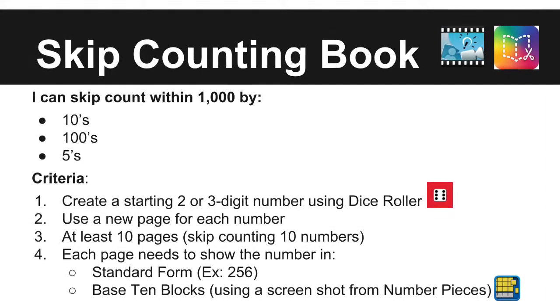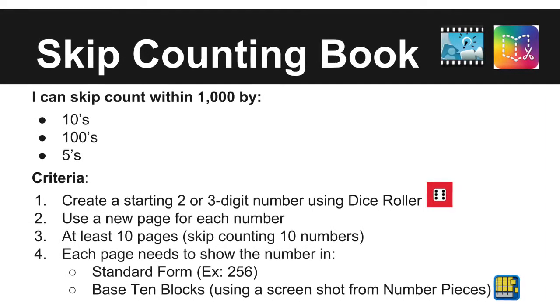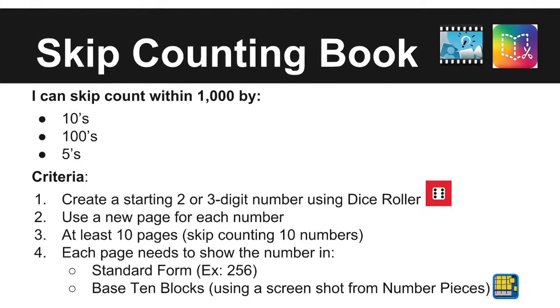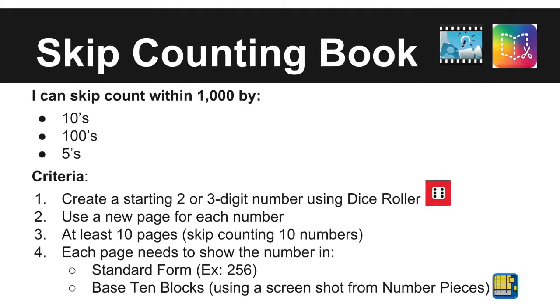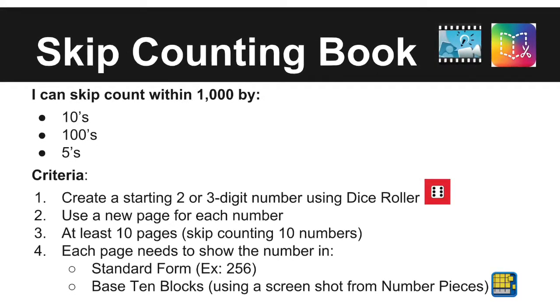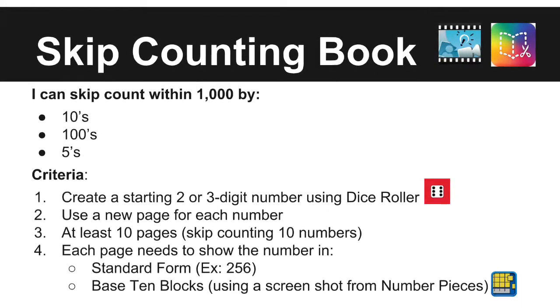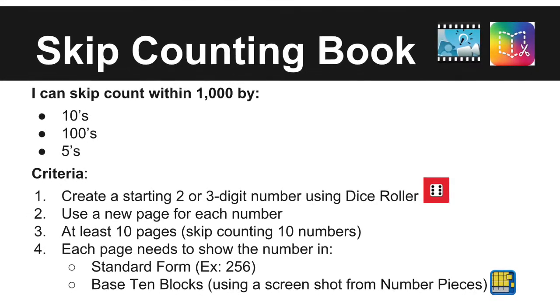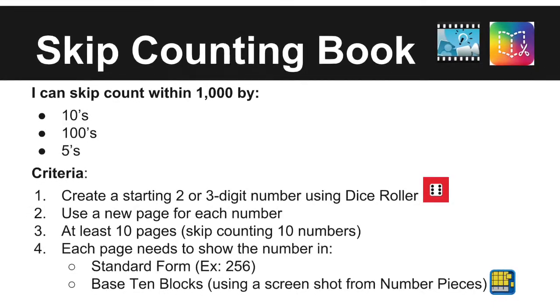The first task is a skip counting book. Students may choose between Explain Everything and Book Creator — two apps they have used previously and are familiar with. The target is to skip count within 1000 by 10s, 100s, and 5s.